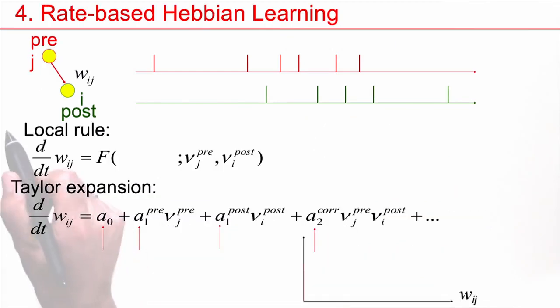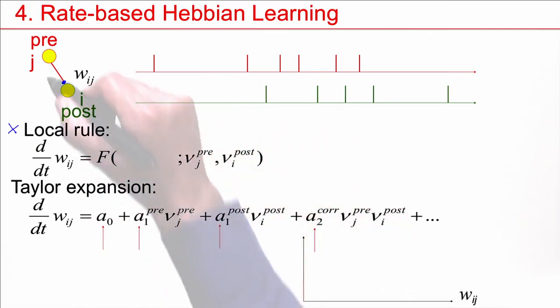First we want to exploit that it's a local rule. Local rule means, for the change of this connection, I can only use information that's available. What's available is the spikes that would travel along the axon to the synapse. And since we are talking about a rate model, this will be covered by the presynaptic firing rate. Similarly, if the postsynaptic neuron is active, it can be characterized by its postsynaptic firing rate. This would be a completely local rule. However, there is a more general local rule. What's also available is the weight of the synapse itself. The synapse, WIJ, knows about its own weight.